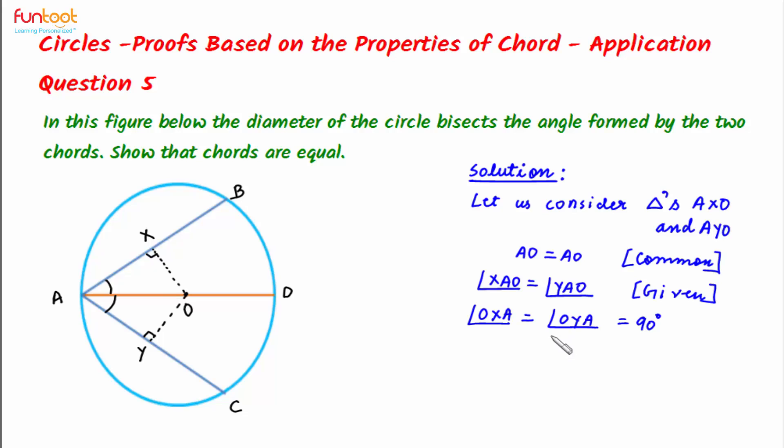So here we have the three corresponding parts. Therefore, we can say that triangle AXO is congruent to triangle AYO by AAS condition.